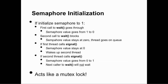Let's look at how to initialize semaphores. If we initialize the semaphore to one, the first thread that calls wait will go right through without waiting and the semaphore value will go from one to zero. If a second thread calls wait, it will block because the value is zero, and the thread goes on the queue. If the first thread then calls signal, the semaphore value stays at zero but it wakes up the second thread, which returns from wait. If the second thread now calls signal, the value will go from zero to one, meaning the next caller to wait will not wait. This may look like a familiar pattern — it's basically a mutex lock. If you initialize a semaphore to one and every thread has paired calls to wait followed by signal, then a semaphore acts just like a lock.